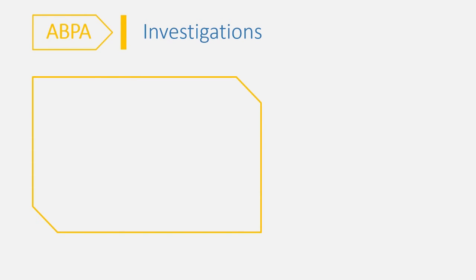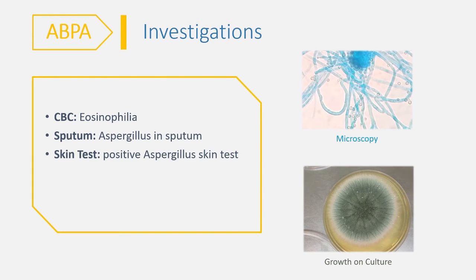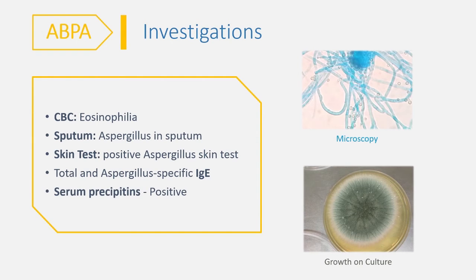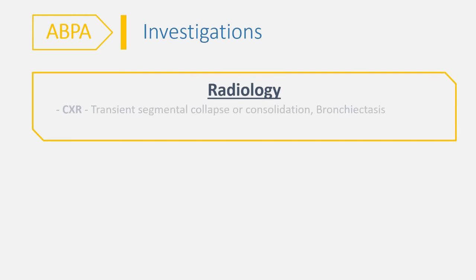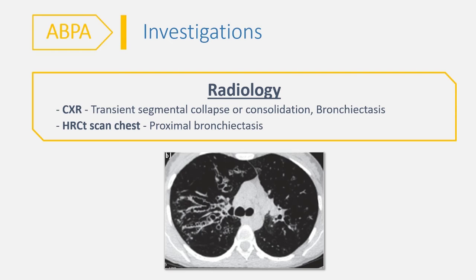Coming to investigations which can be performed in patients suspected to have ABPA: complete blood count with differential leukocyte will reveal eosinophilia; sputum stain and microscopy will show Aspergillus in sputum; skin tests for Aspergillus will be positive; total and Aspergillus-specific IgE radioallergosorbent test is also done; serum precipitants will be positive. On chest radiograph, transient segmental collapse or consolidation, or bronchiectasis may be noted, and a chest x-ray can also be normal. High-resolution CT chest may reveal proximal bronchiectasis in the inner two-thirds of the chest CT field.